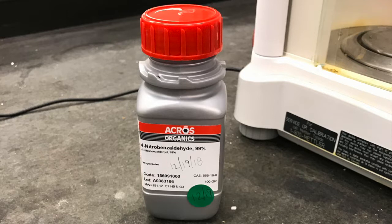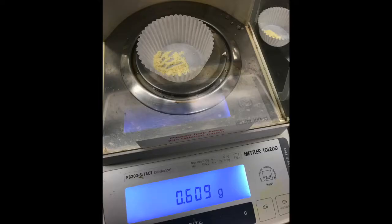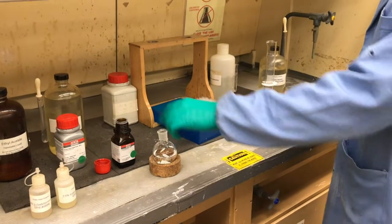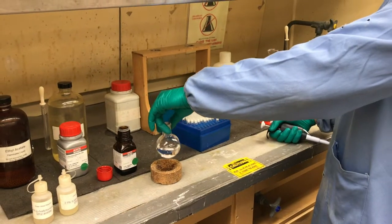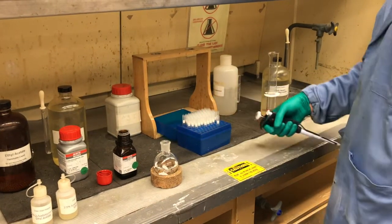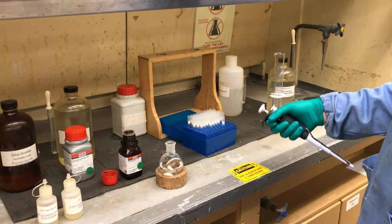So first we start out by weighing the p-nitrobenzaldehyde. We weighed out 0.609 grams. You can see that it's a yellow solid. We've already added the water and the stir bar to the 100 ml round bottom flask. Now we're going to add the 2-acetylpyridine.